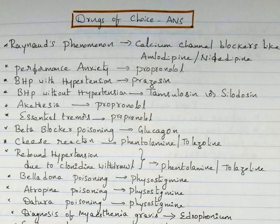Akathisia: drug of choice is propranolol. Essential tremors: again propranolol. Beta blocker poisoning: glucagon — remember glucagon is given for beta blocker poisoning. Cheese reaction: phentolamine or tolazoline. Cheese reaction and clonidine withdrawal — for both, phentolamine or tolazoline is the drug of choice.